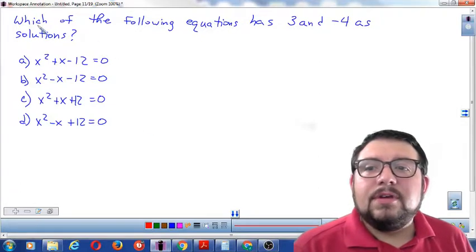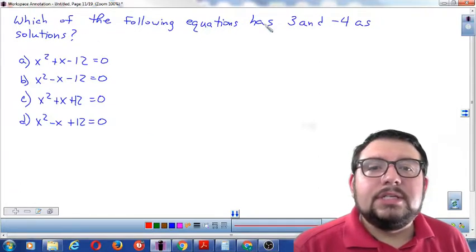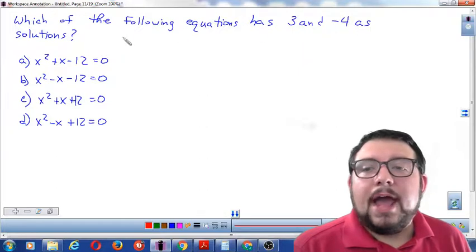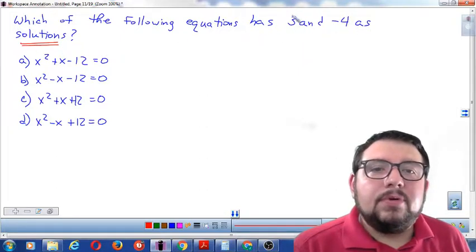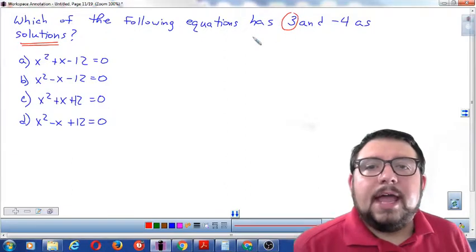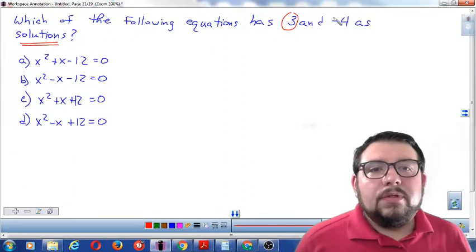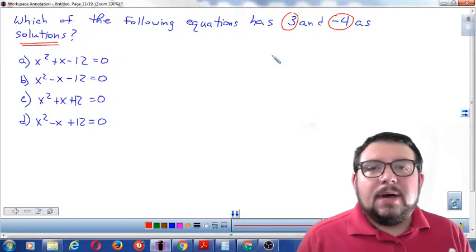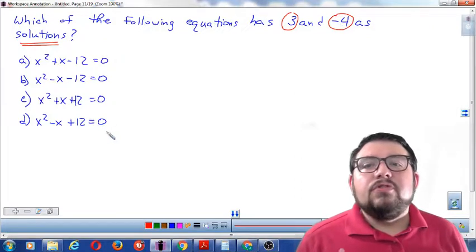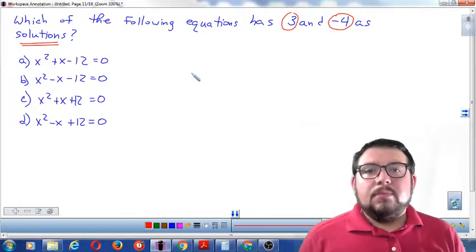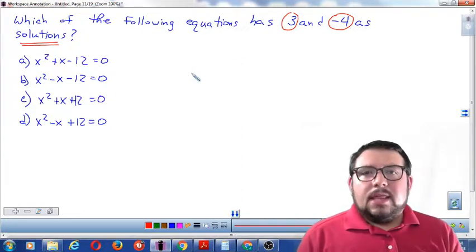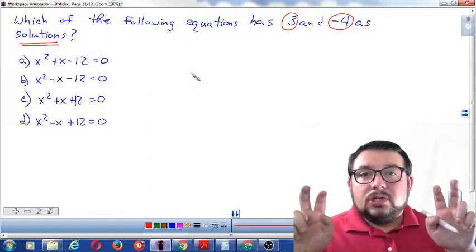Let's take a look at this problem. Which of the following equations has 3 and negative 4 as solutions? Solutions basically means that when I put in the number 3 for my x value or the number negative 4 as my x value, they will produce the answer 0. So if I put in 3 and the number 0 comes out, then that means that I have found a solution.